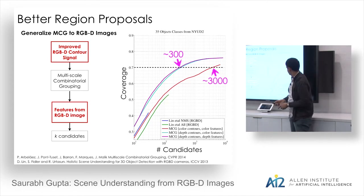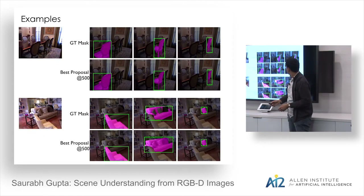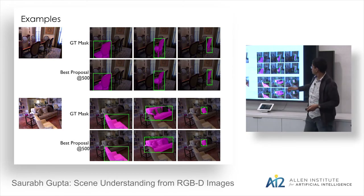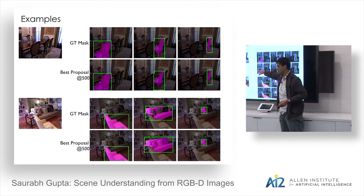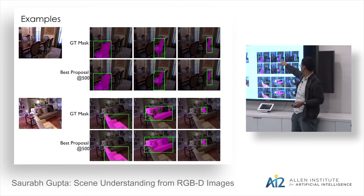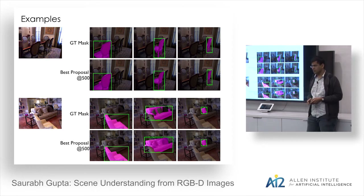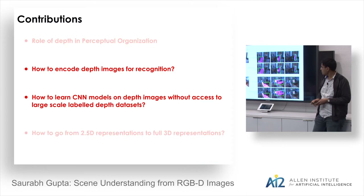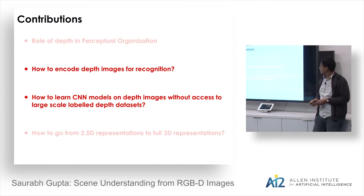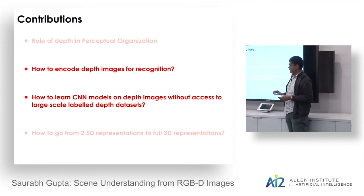We outperform other RGBD methods. For example, from the top 500 proposals, you get fine object details very accurately with a small number of proposals covering the objects present in the scene.